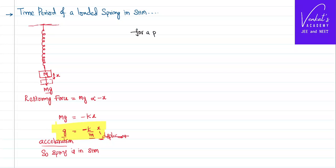What is that we have derived? For a particle in simple harmonic motion, acceleration is equal to minus omega square y where y is the displacement. So if I compare these two equations, both are same. This is equation number 1, this is equation number 2.